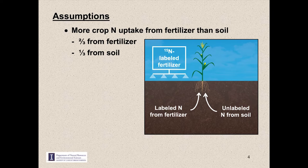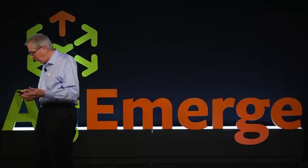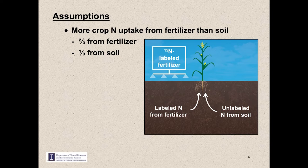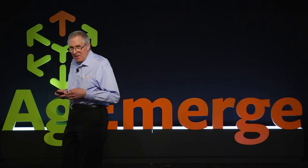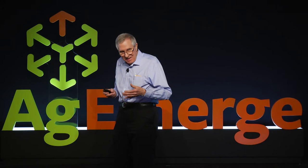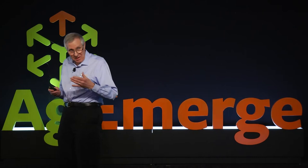The best way to check that assumption is using isotopically labeled N15 fertilizer applied in the field, and then at harvest, the plant material is analyzed to determine the uptake of labeled fertilizer N and unlabeled soil N. That's exactly what was done to collect the data shown in this slide. It comes from static plot studies in western Illinois at Monmouth on a series of continuous corn plots.